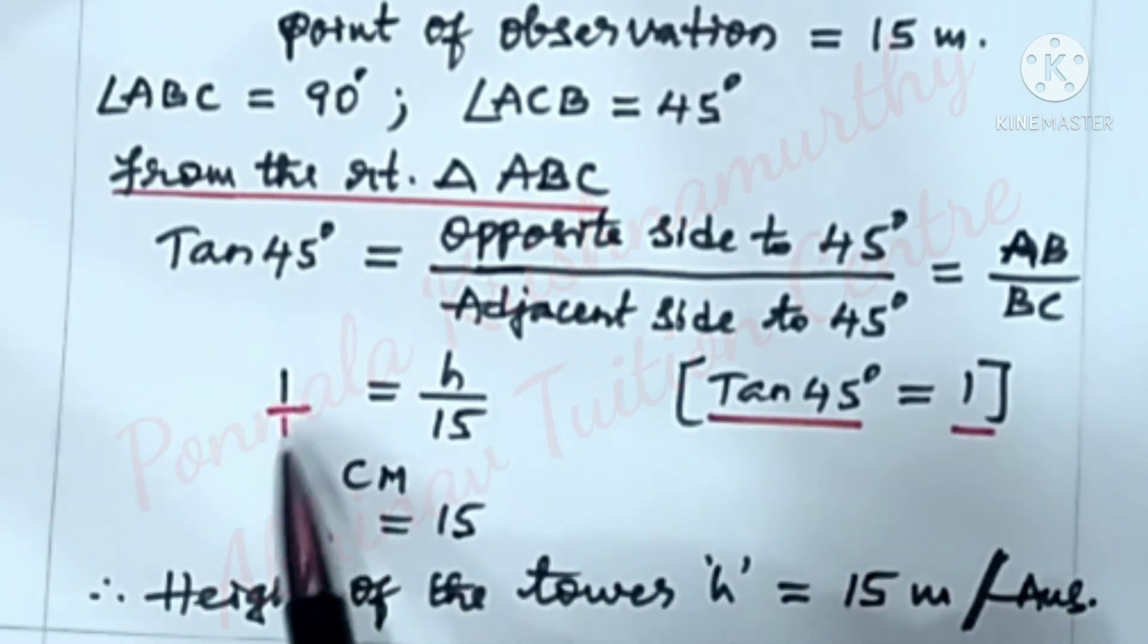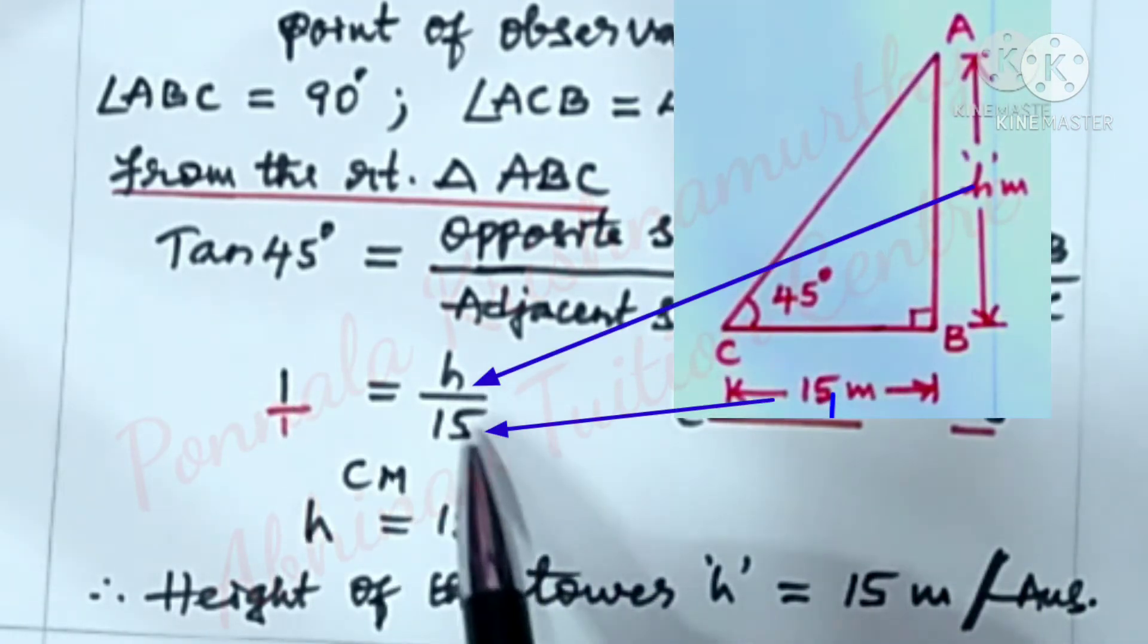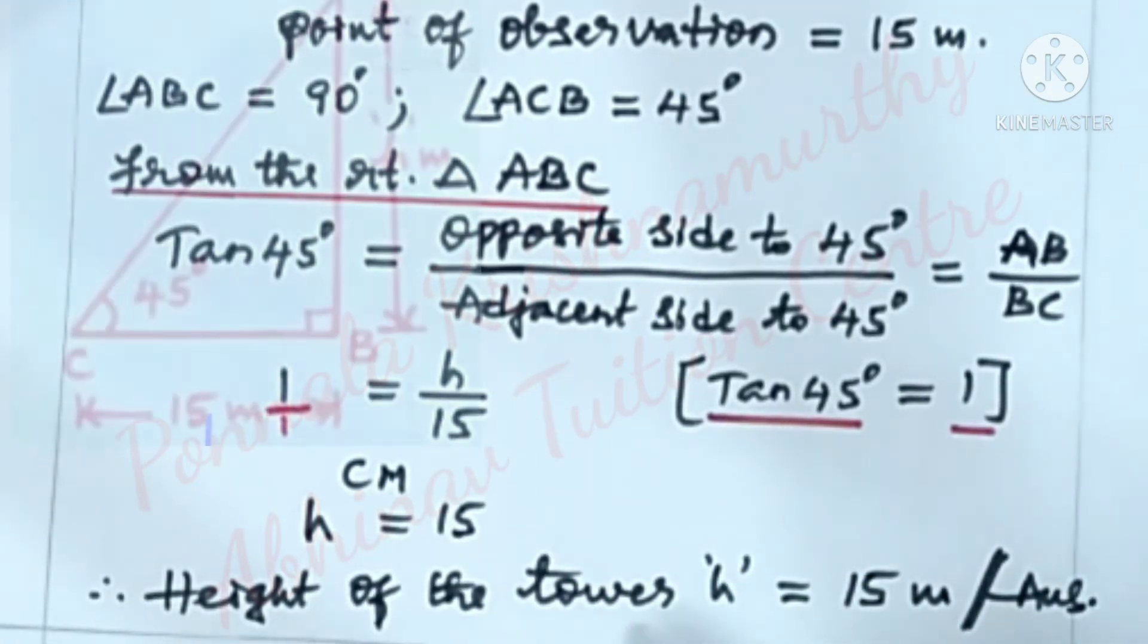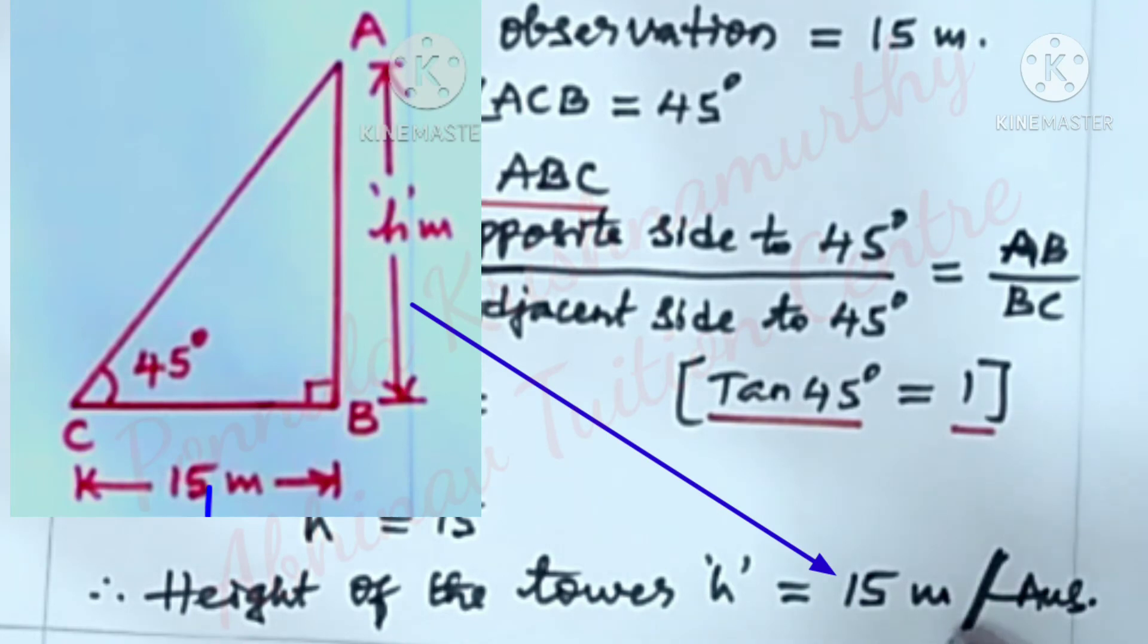Therefore, 1 is equal to h by 15. Cross multiplication, h is equal to 15. Therefore, height of the tower h is equal to 15 meters. This is the answer.